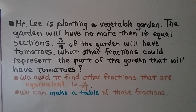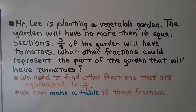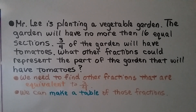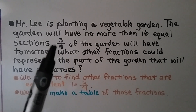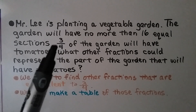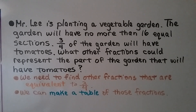Mr. Lee is planting a vegetable garden. The garden will have no more than 16 equal sections, and three-fourths of the garden will have tomatoes. What other fractions could represent the part of the garden that will have tomatoes? We need to find other fractions that are equivalent to three-fourths, and we can make a table of those fractions.